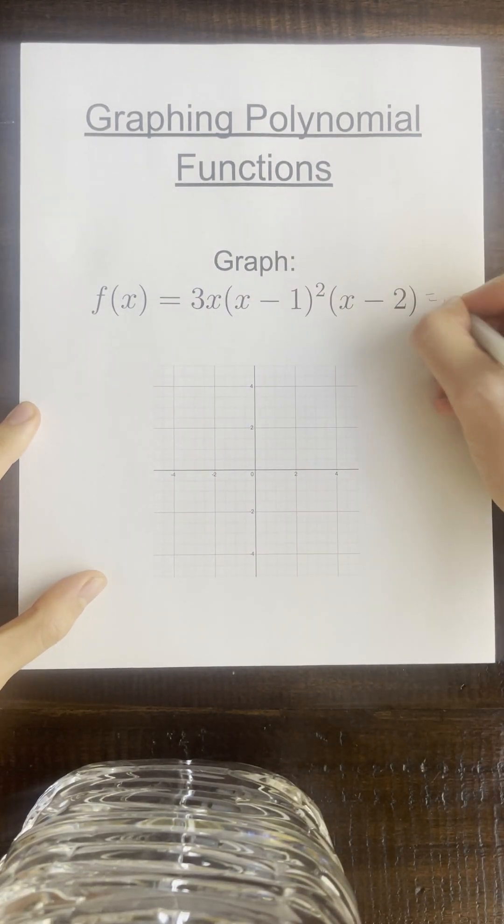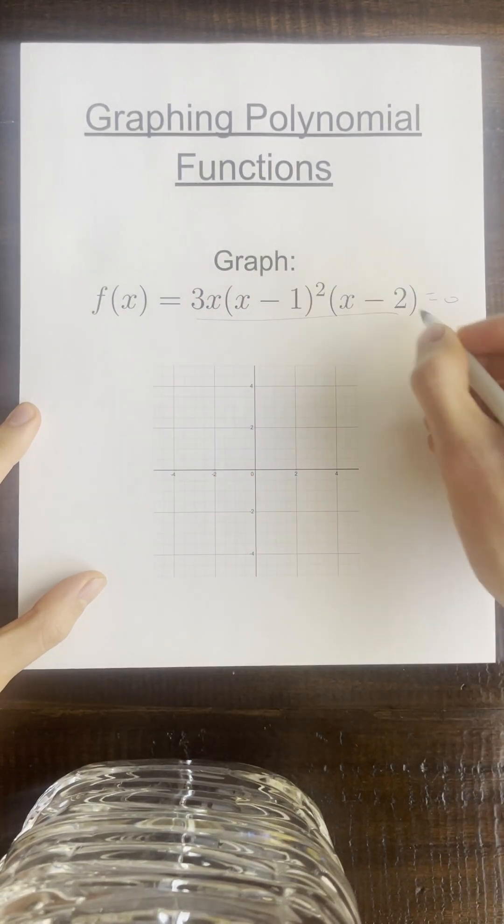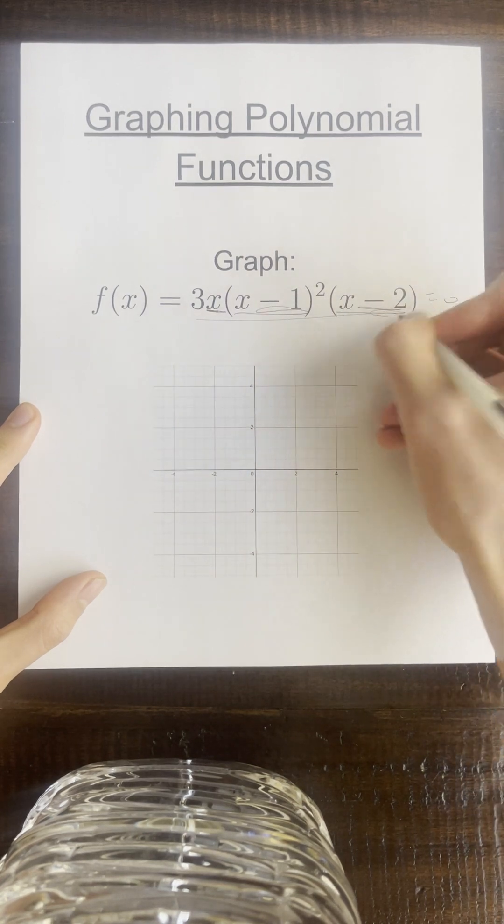Step one is to find the roots. So set this equal to zero. In order for this to be zero, either this is zero, this is zero, or this is zero.